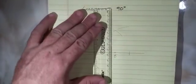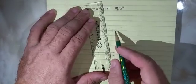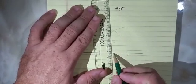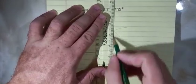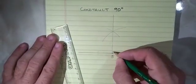Now having done that we just line up our ruler with the intersection of the arc and our point B and we have 90 degrees.